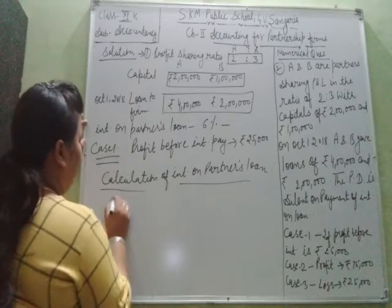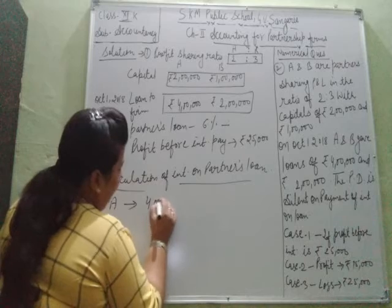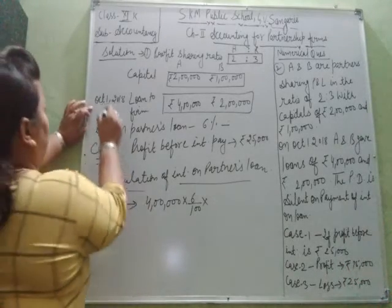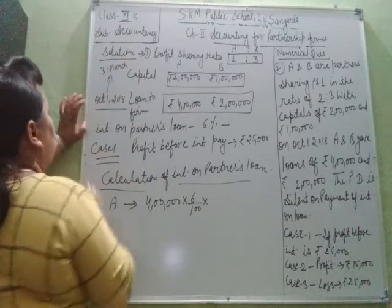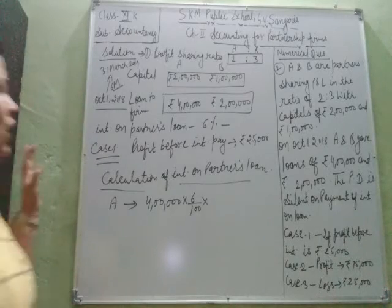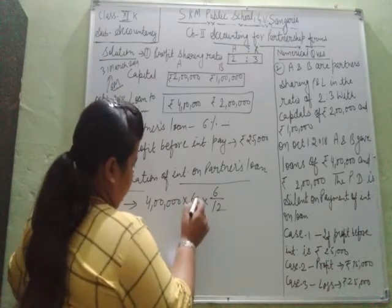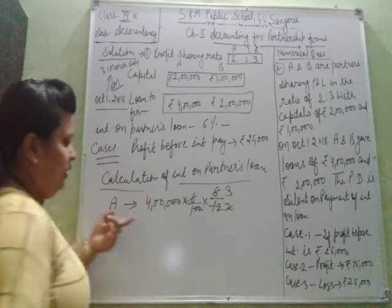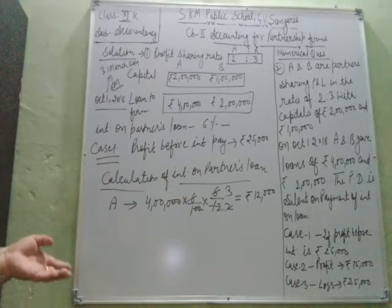We will calculate the amount of interest to be paid to A. The loan amount of A is Rs 4 lakh, the rate is 6%, and it will be paid for 6 months because the loan was given on October 1st and is payable on March 31st. So the interest amount for A will come to Rs 12,000.